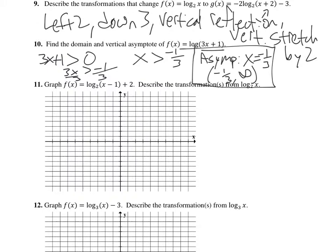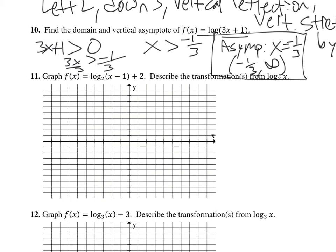So the asymptote is at x equals negative one-third. And the domain would be from negative one-third to infinity because it's greater than. Describe the transformations for log base two of x minus one plus two. So we've got a minus one — that's going to go right one — and up two.